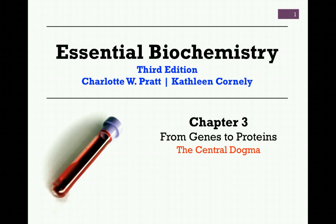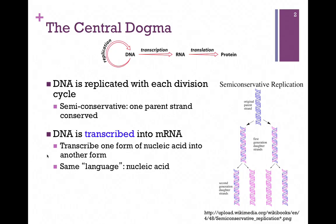In our studies of Chapter 3, From Genes to Proteins, we'll consider in this lesson the central dogma. Probably the way most of us remember the central dogma would be in simplified form: DNA goes to RNA goes to protein, but we might have to modify that slightly as we'll see.